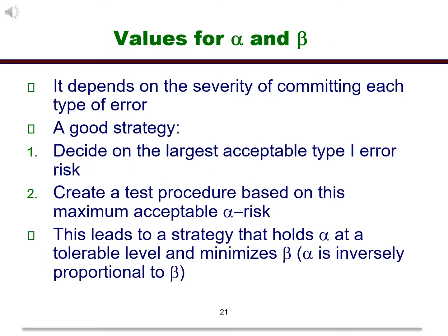We need to decide on values for alpha and beta. A good strategy is to decide on the largest value for alpha that you can live with and try to minimize the beta risk. This can be done by making your sample size as large as possible, within reason of course.